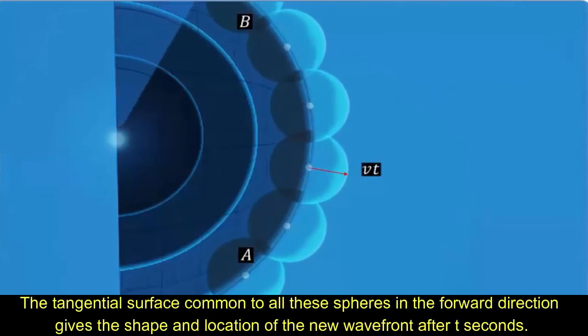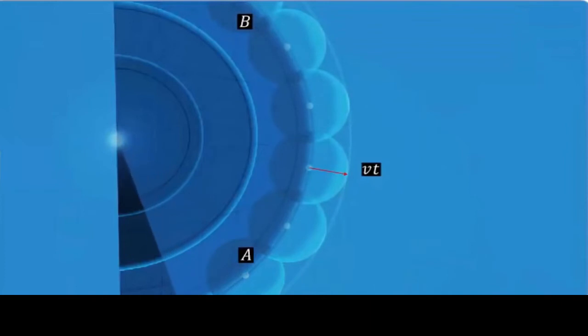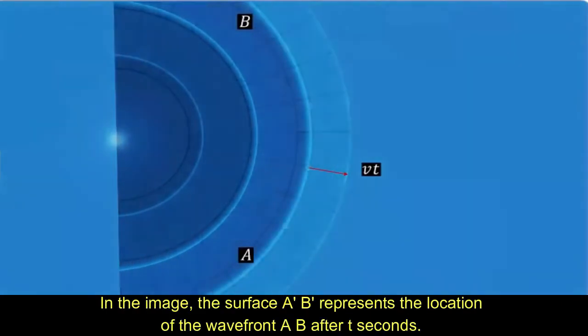The tangential surface common to all these spheres in the forward direction gives the shape and location of the new wavefront after t seconds. In the image, the surface A-B- represents the location of the wavefront AB after t seconds.